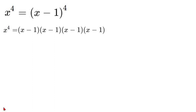So if we multiplied that out, we would have x to the power of 4 is equal to x to the power of 4 minus 4x to the power of 3 plus 6x squared minus 4x plus 1.